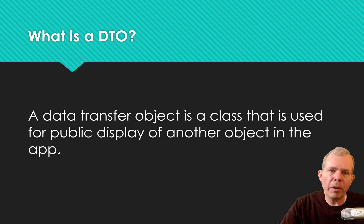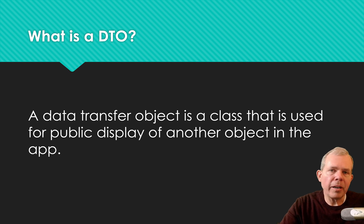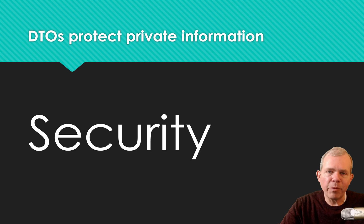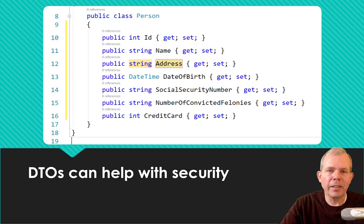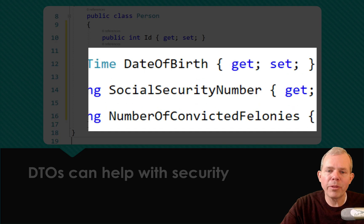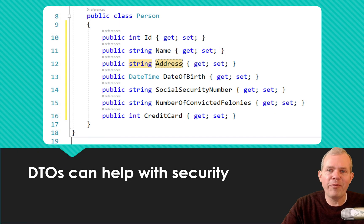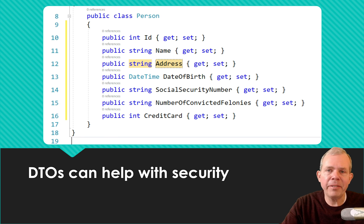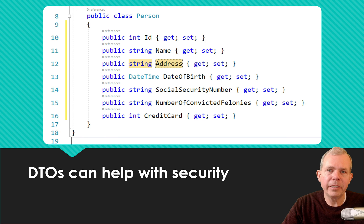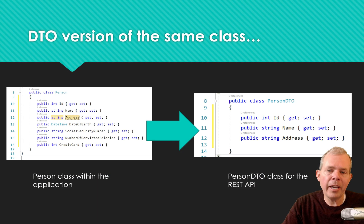The first reason you would want to use a DTO is that the data transfer object needs to modify the object so that it is more presentable. Consider security: if you have an object with a lot of sensitive data — like date of birth, social security number, number of convicted felons, and credit card number — you don't want to share all of that. But you still need to tell somebody that you have a person in your database, so you need some kind of a filtering class.